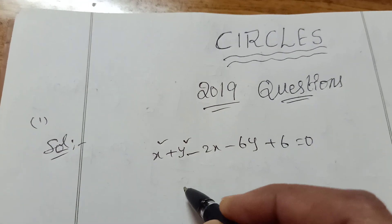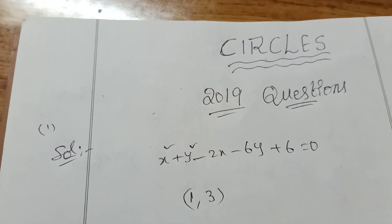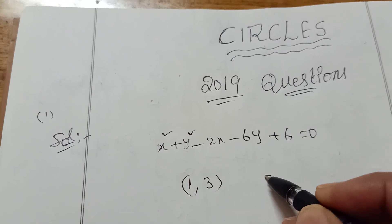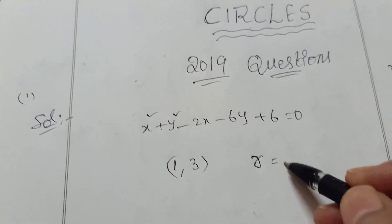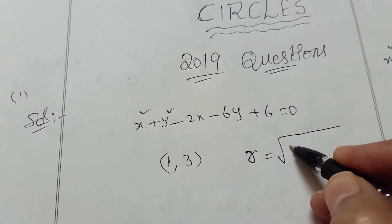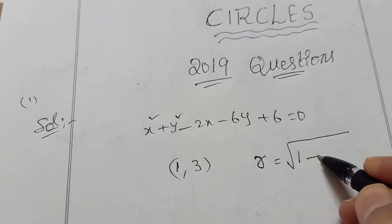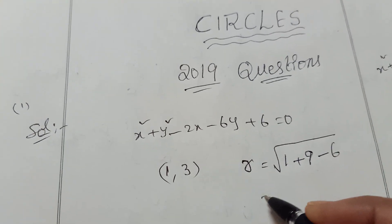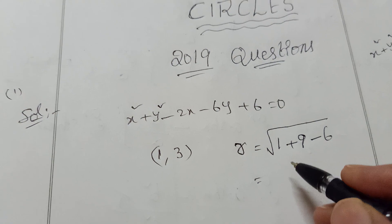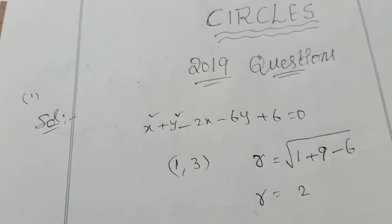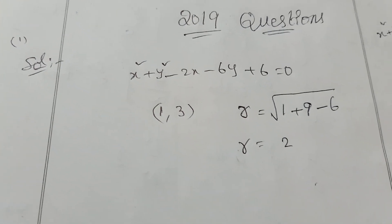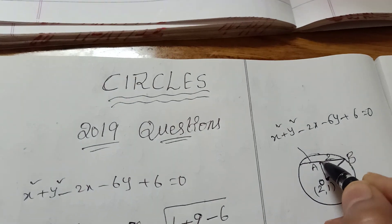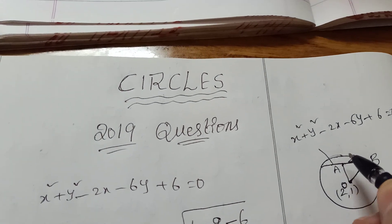For the equation x² + y² − 2x − 6y + 6 = 0, the center is (1, 3) — that is (−g, −f). Now find r: r = √(g² + f² − c) = √(1 + 9 − 6) = √4 = 2. So r equals 2.